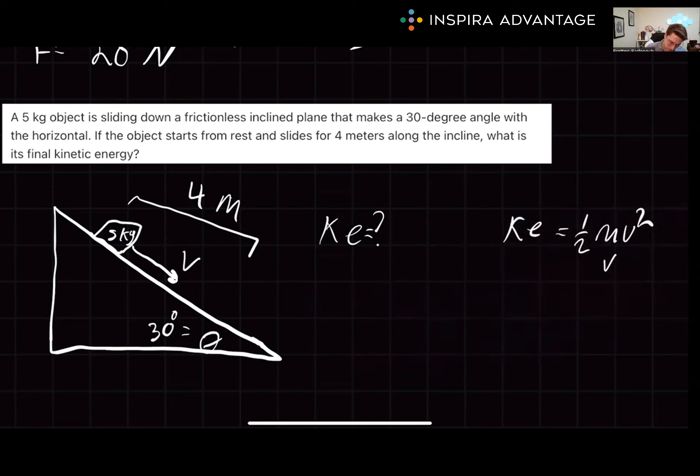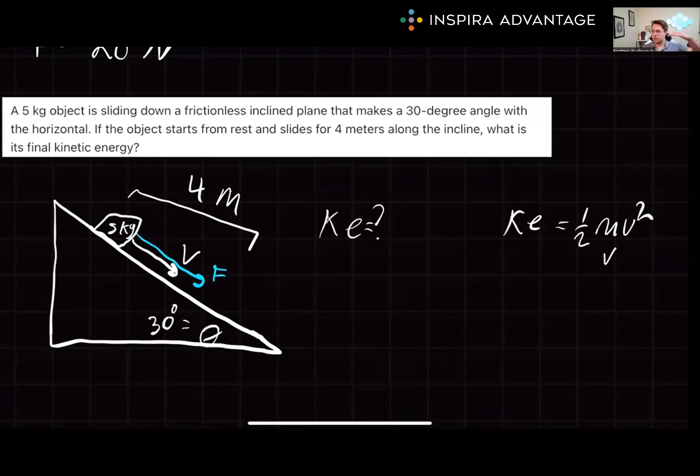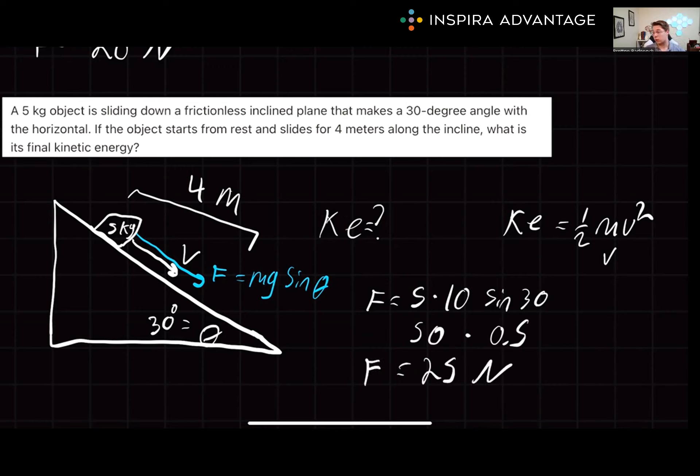A good way to calculate velocity is to remember the force on this box moving down the incline equals mg sine of theta. We have the mass, the gravity, and theta. So this is an equation we want to use. If we solve for our force, we've got five times 10 times the sine of 30, which is 50 times 0.5. So we have 25 newtons as our force.